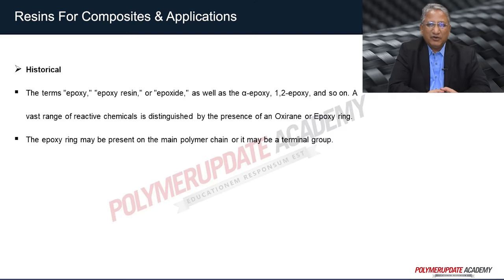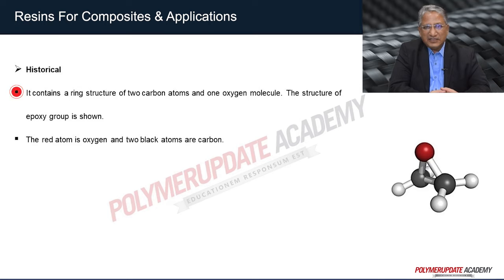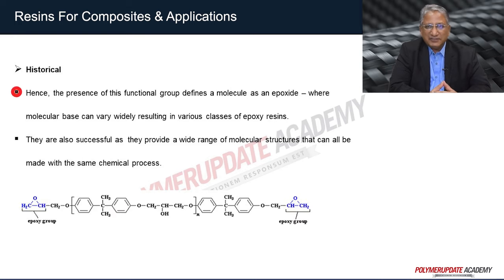Epoxy resin is a high performance resin used for making high performance polymeric composites. The term epoxy, epoxy resin, epoxide, alpha epoxy, or 1,2-epoxy refers to a broad group of reactive compounds characterized by the presence of oxirane or epoxirane. The epoxirane ring may be present in the main polymer chain or at a terminal group. It contains a ring structure of two carbon atoms and one oxygen molecule, called the oxirane ring. The red atom is oxygen and two black atoms are carbon. The presence of this functional group defines a molecule as epoxide, where the molecule base can vary widely, resulting in various classes of epoxy resins.